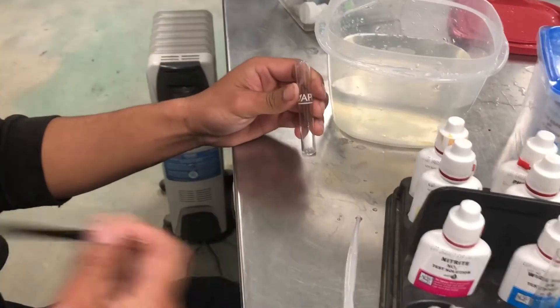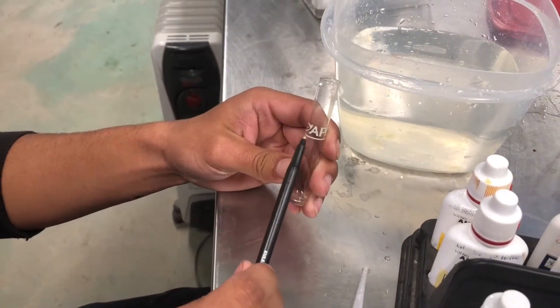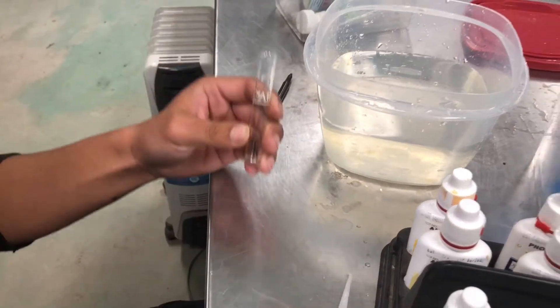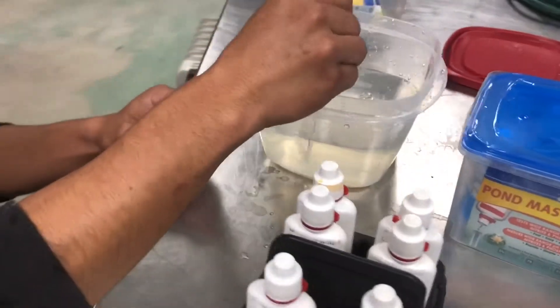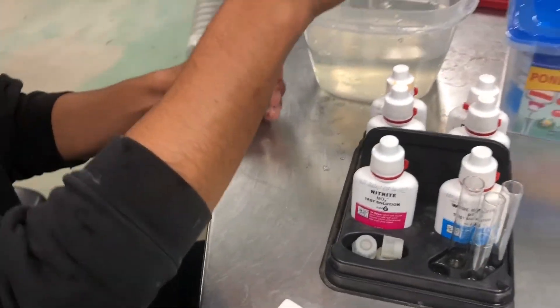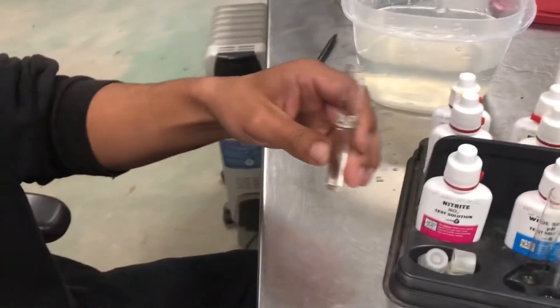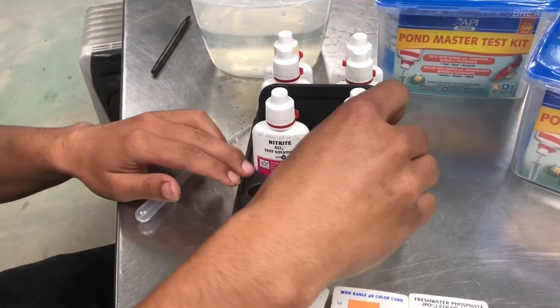So what you want to do, they come with these vials, and you can see there's a line right there. We want to fill up the water you're going to test with up to the line. So, and there's going to be four vials, so fill up the four vials up to the line with the water that you're going to be testing for.